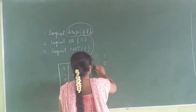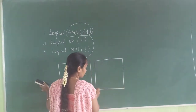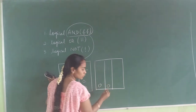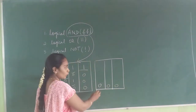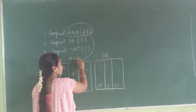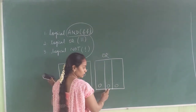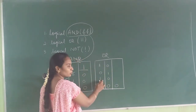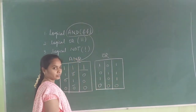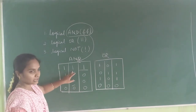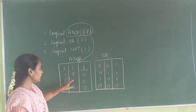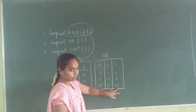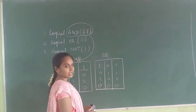Coming to the OR operator, taking an example with two inputs: in the OR operator, if both inputs are false, the output will be false. But if either any one of the inputs is true, then the output is also true. So the difference is: in AND, both inputs must be true for the output to be true; in OR, if either any one is true, it is considered true output.